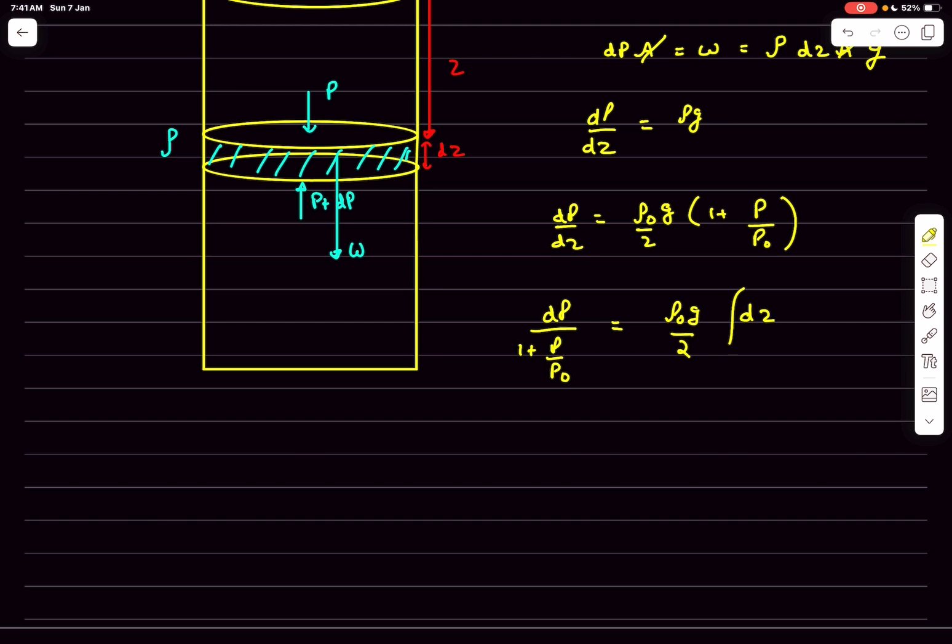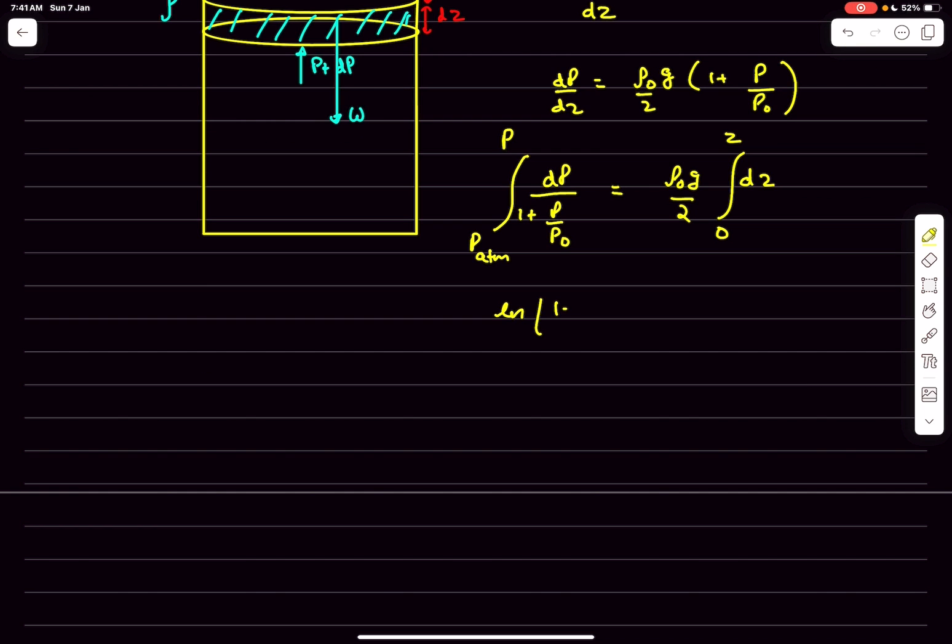Now we can integrate this expression. At z equal 0, that is we are at the free surface, the pressure is p_atm. At general z the pressure is p. So this will become natural log of 1 plus p/p0 and we have to divide it with 1/p0, so that will go to the numerator.